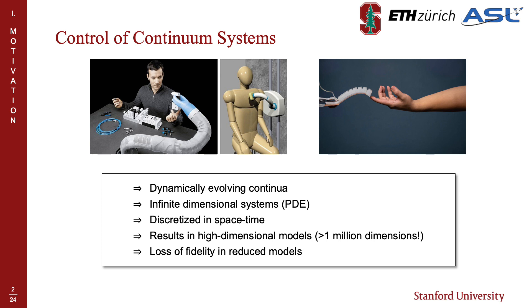The question is, how do we come up with low-dimensional surrogates that are tractable for online computation but accurate enough for closed-loop control?